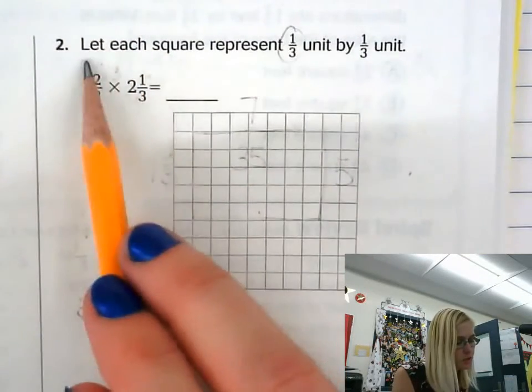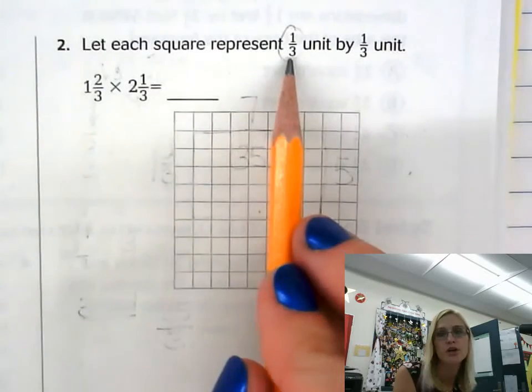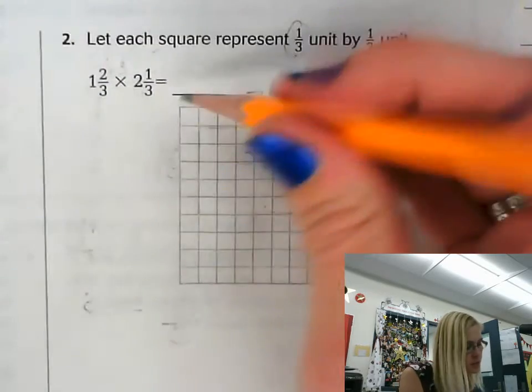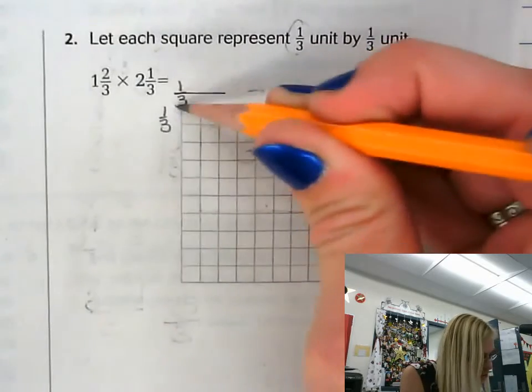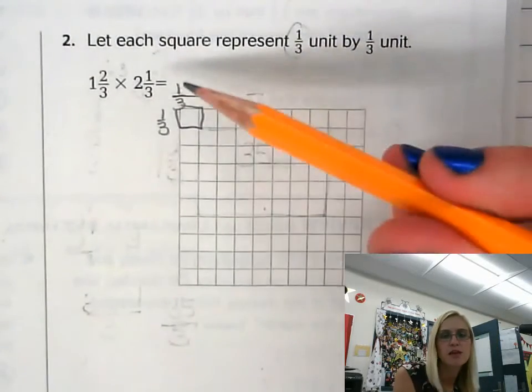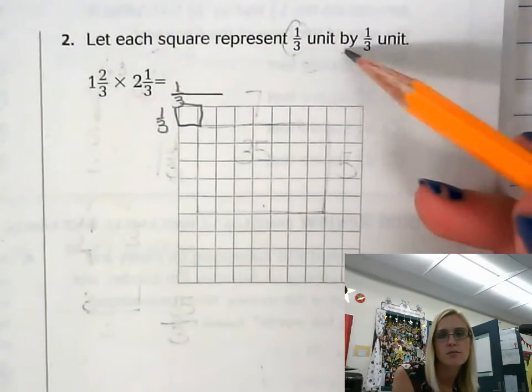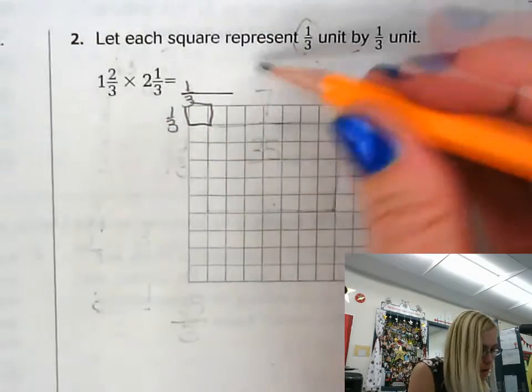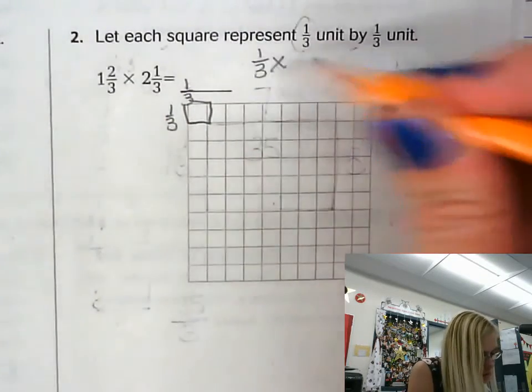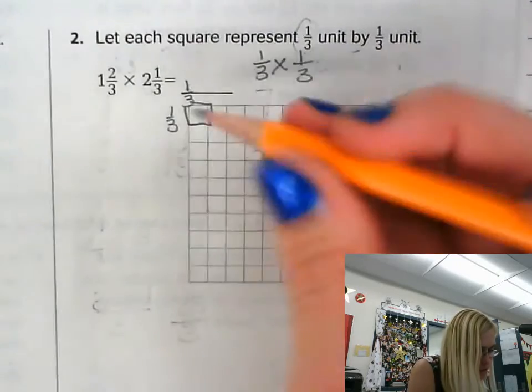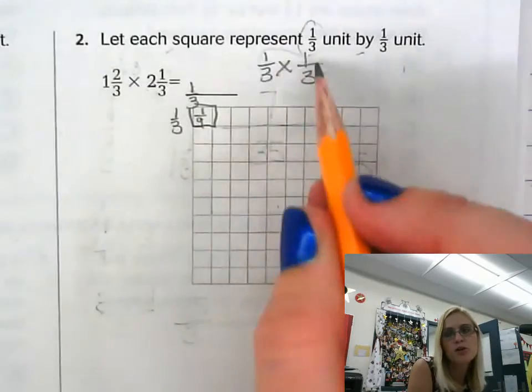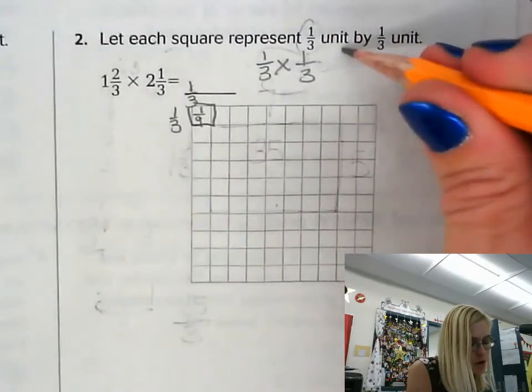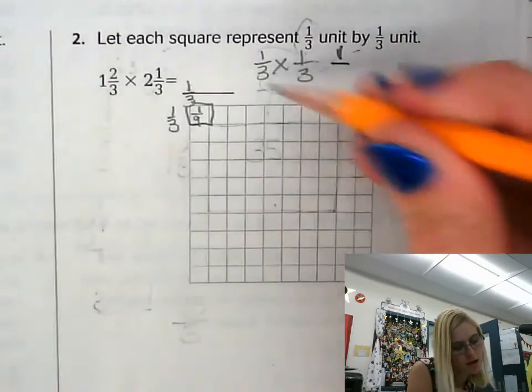So in this instance, number two says let each square represent one third. So in fact, each unit is going to be one third times one third. So this area, I'm going to take and multiply the side lengths of one third by one third. Well, one third times one third means that this area is actually one ninth, because I'm multiplying my numerators and then I'm multiplying my denominators. One times one is one, and three times three is nine.